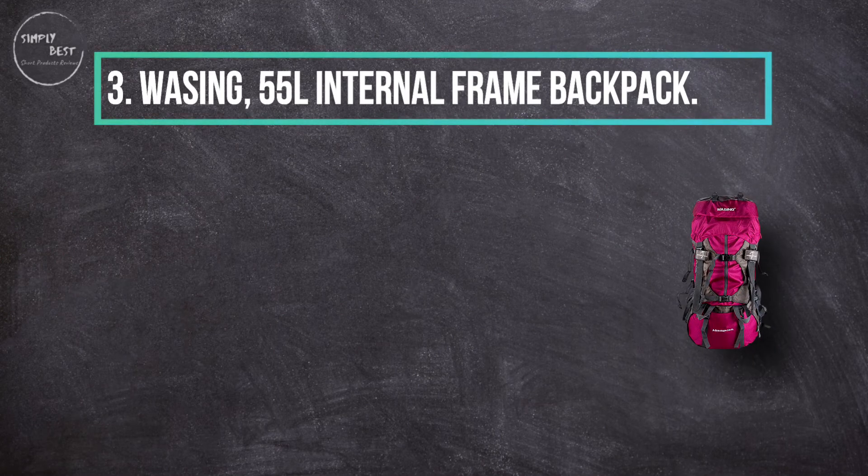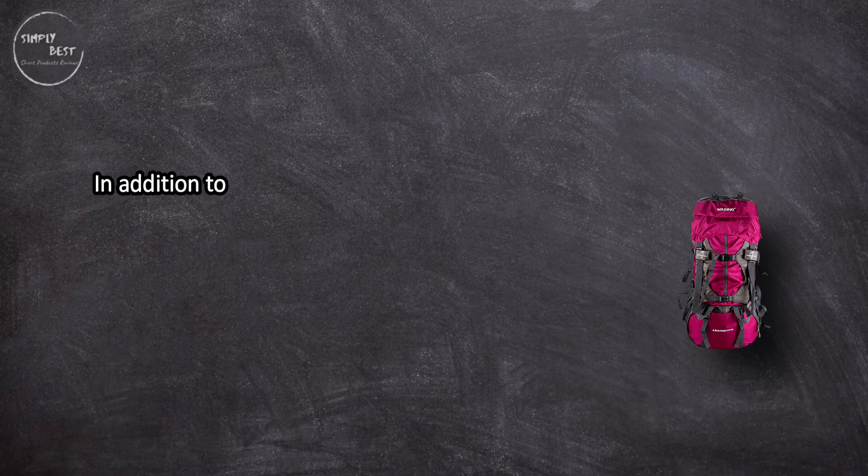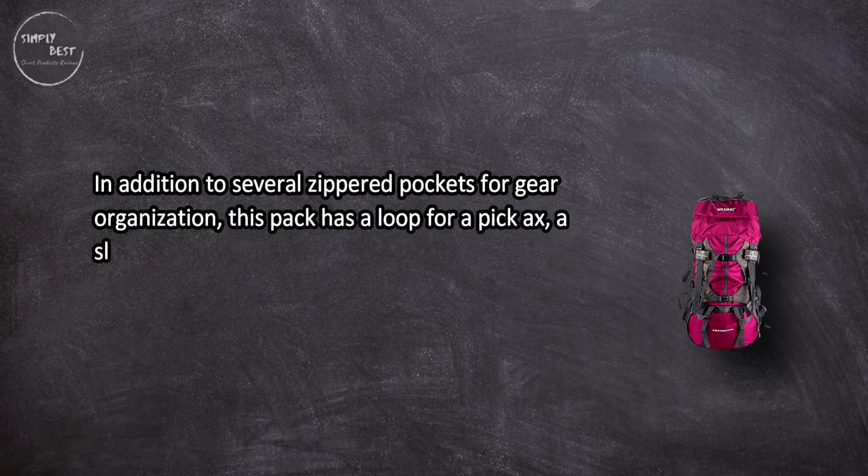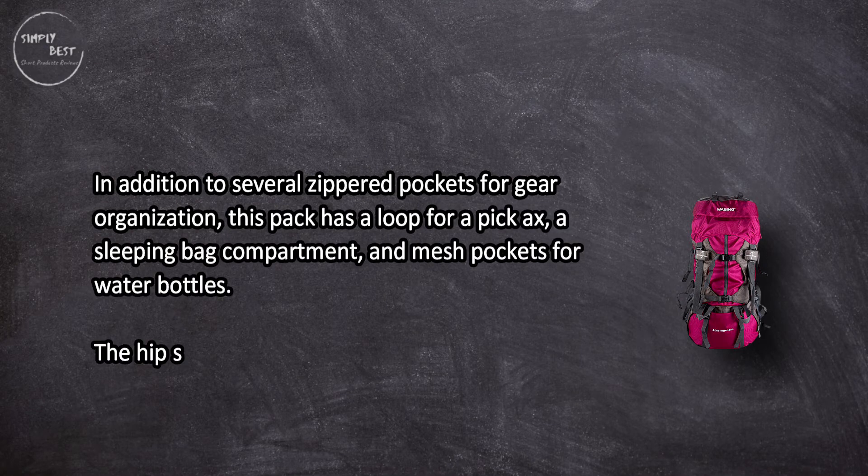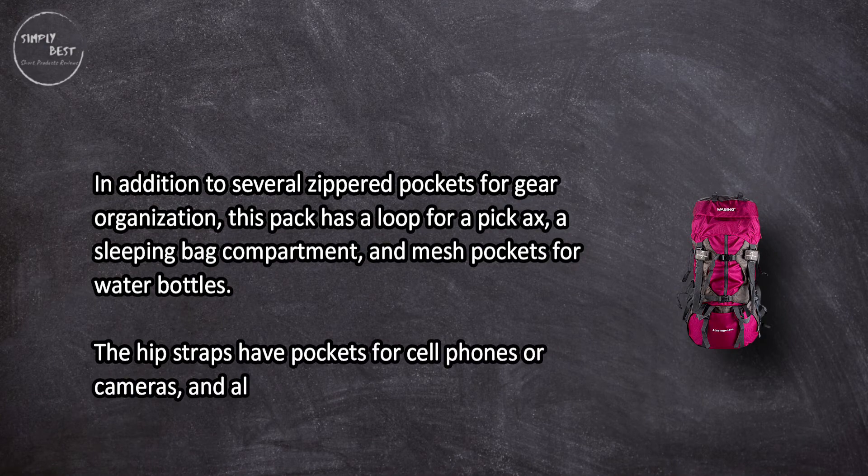At number three, Wasing 55 liters internal frame backpack. In addition to several zippered pockets for gear organization, this pack has a loop for a pickaxe, a sleeping bag compartment, and mesh pockets for water bottles. The hip straps have pockets for cell phones or cameras and also have a built-in whistle for safety.